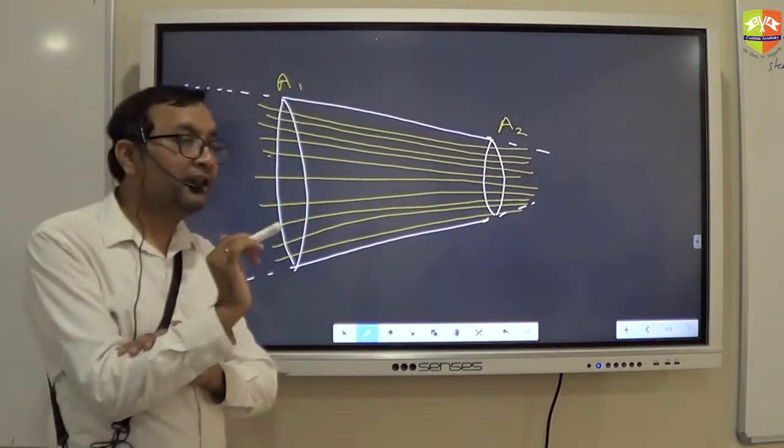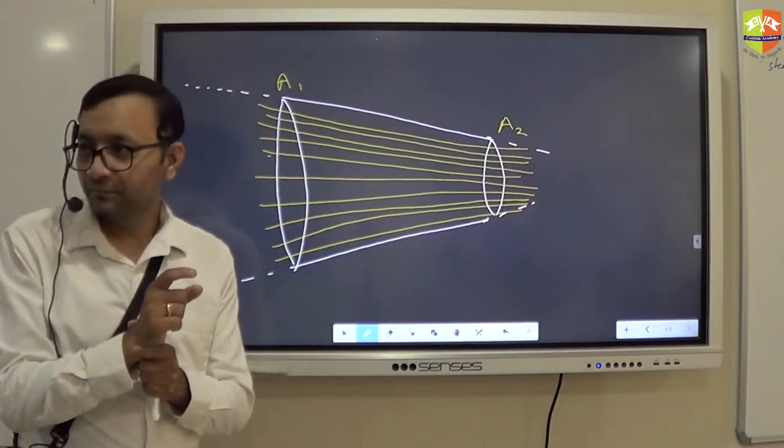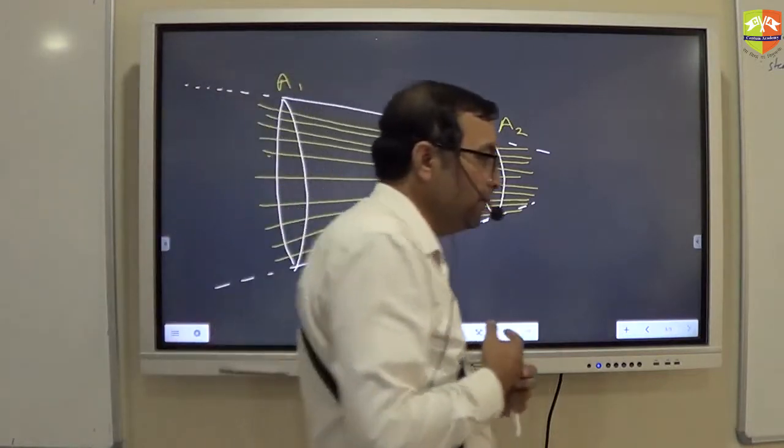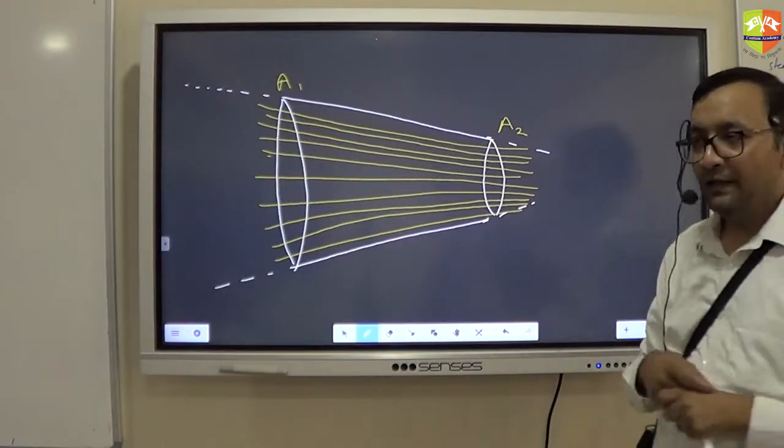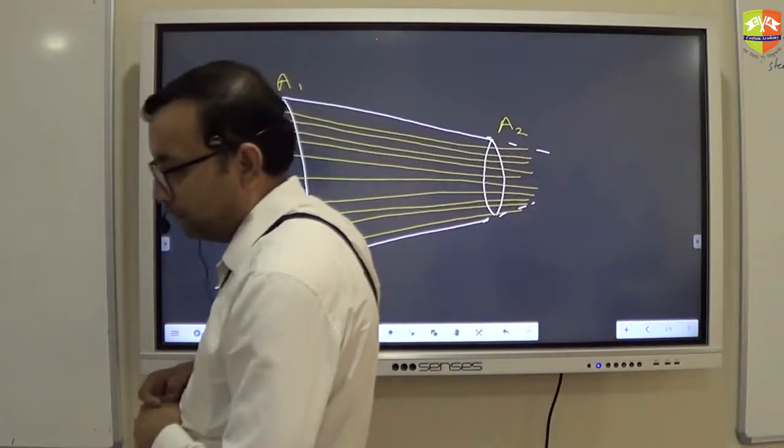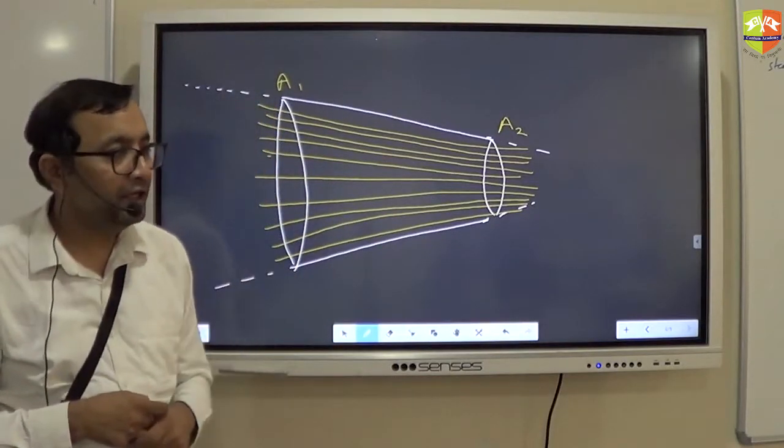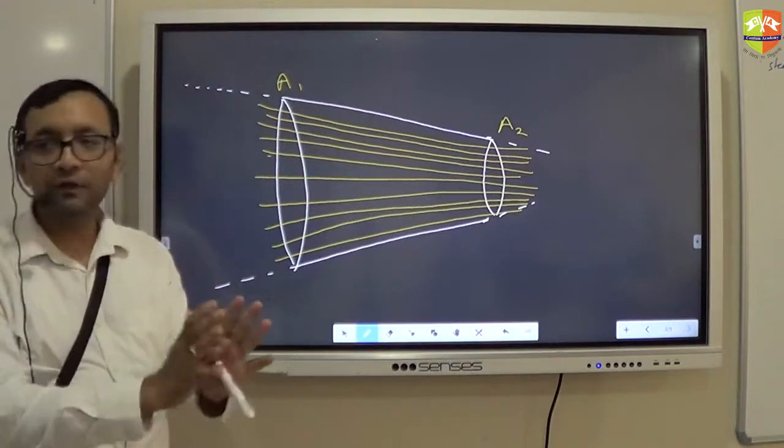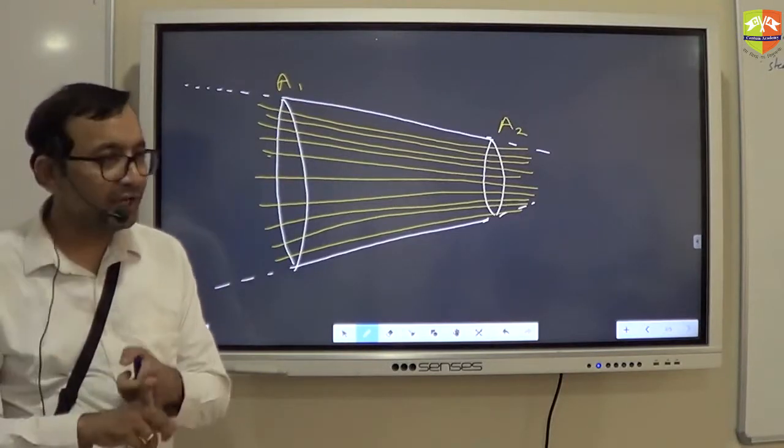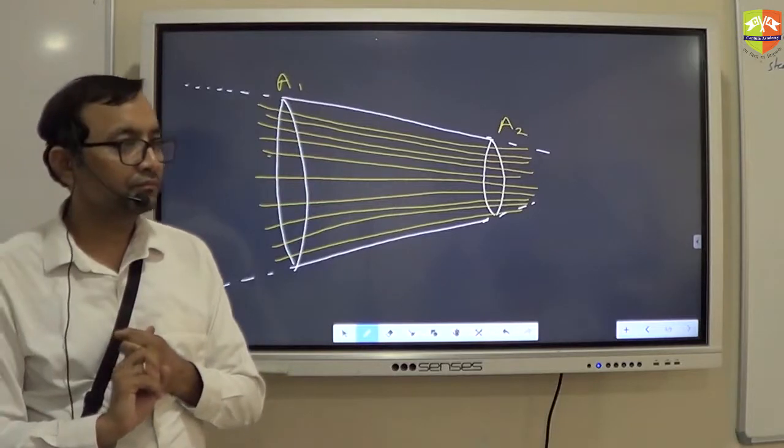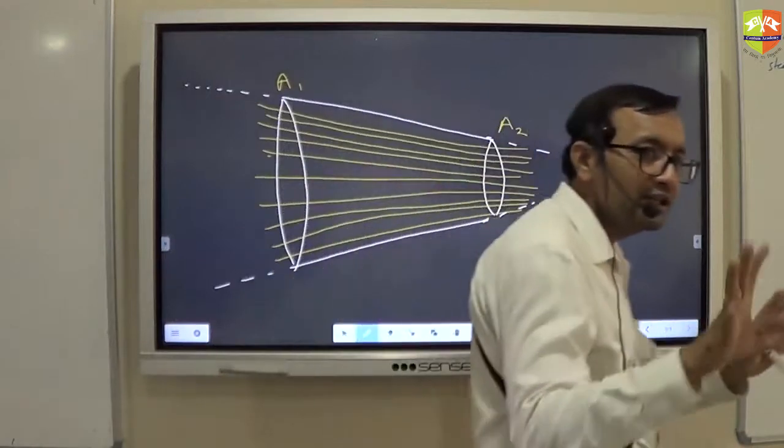So density of streamlines gives you an indication of the magnitude of the velocity. Please write down that the number of streamlines per unit area is proportional to the magnitude of the velocity. So now using streamlines, I have found out the direction as well as magnitude. So this is what the streamlines flow is.